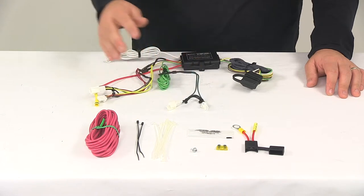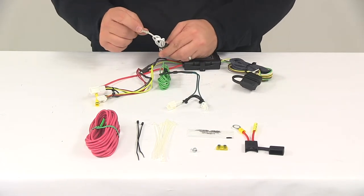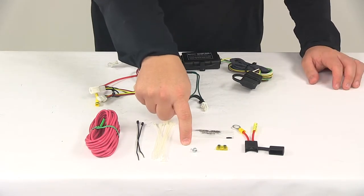Once you have those connected, you'll need to make a ground connection. That's your white wire with a ring terminal attached to it. You want to get that grounded to a suitable grounding location and you can use the included grounding screw.